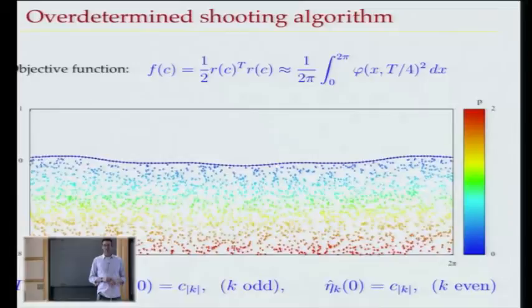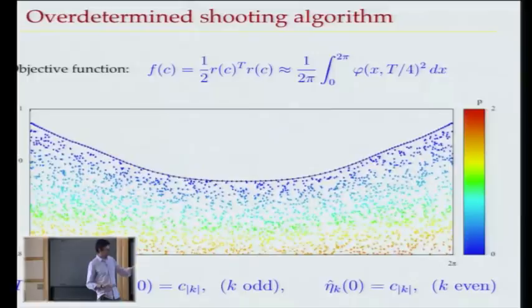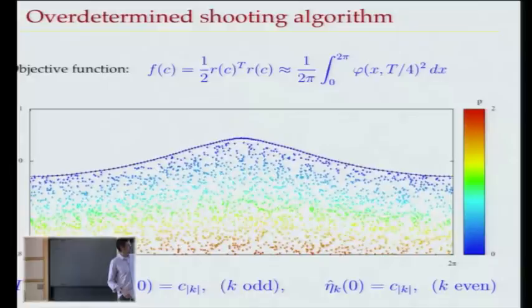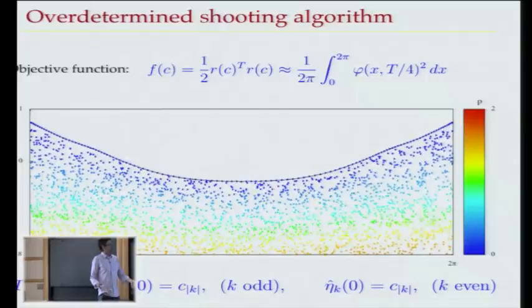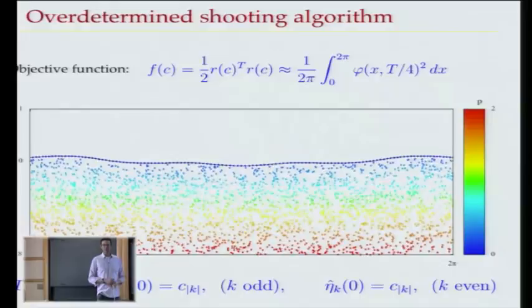You're looking for time-periodic initial conditions. For any initial condition c — the Fourier modes — you can evolve the water wave over some time T/4 and compute a number f. Probably not zero. Then you adjust the initial conditions to drive f to zero — that's the plan. You're also searching for the period, so varying the period will also change f. If f equals zero, you have a periodic solution.